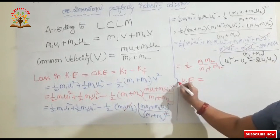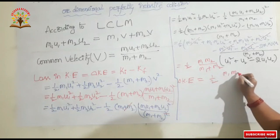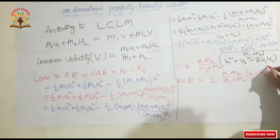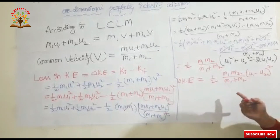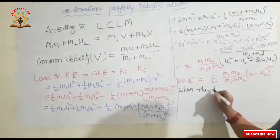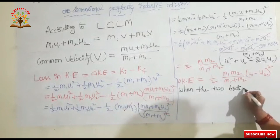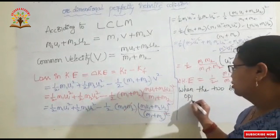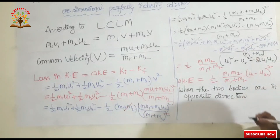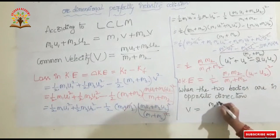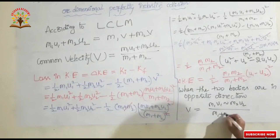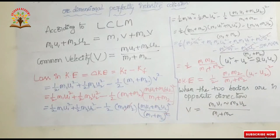Therefore, delta KE = ½ · (M1·M2) / (M1 + M2) · (U1 - U2)². This is the expression when the two bodies move in the same direction. When the two bodies move in opposite directions, the expression for common velocity V is equal to (M1·U1 - M2·U2) / (M1 + M2), where the difference means the higher value minus the lower value.